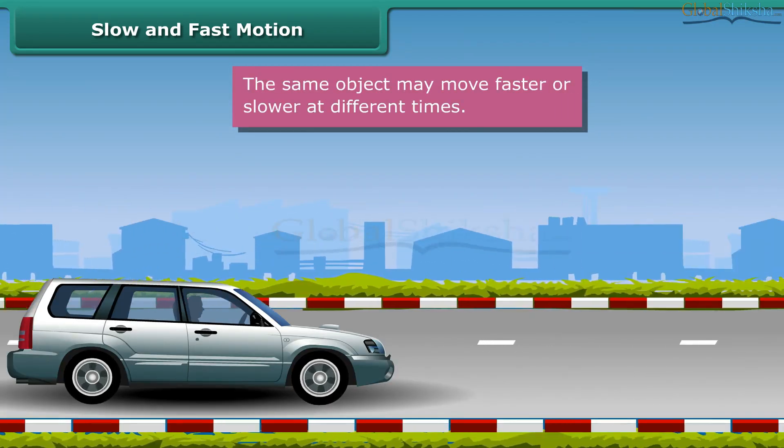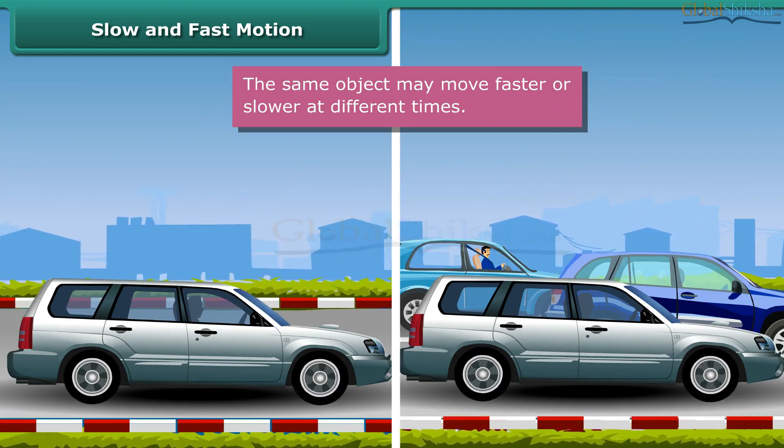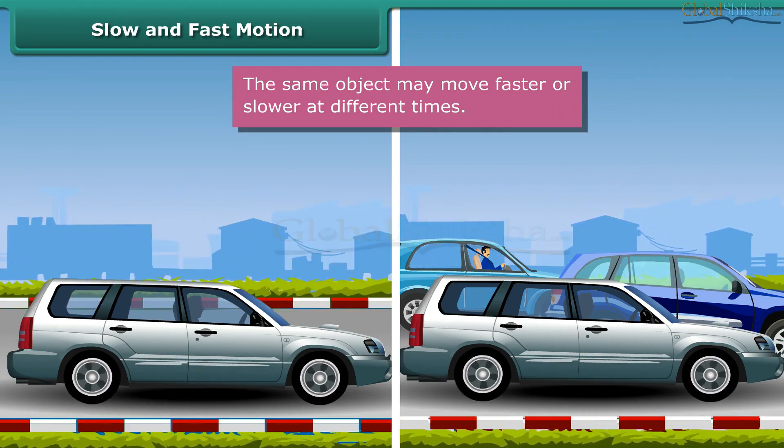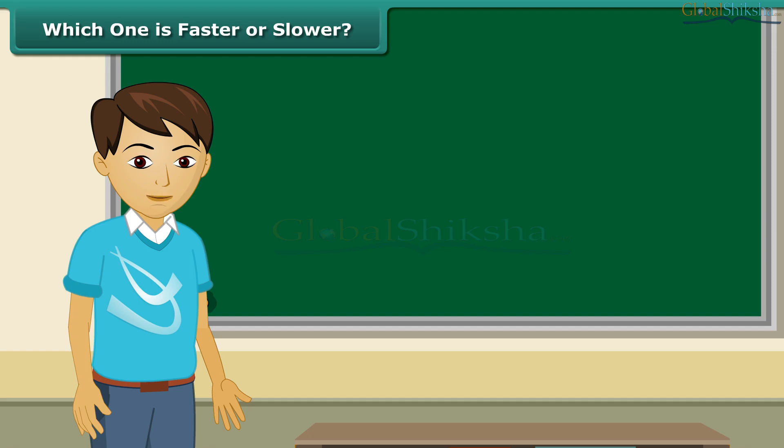Now, the same taxi moves fast on an empty road and slow on a busy road. Thus, the same object can move fast at one time and slow at another time. The next step is to identify whether an object is moving faster or slower than another object. To do that, you must calculate the distance covered by both the objects in the same time interval.